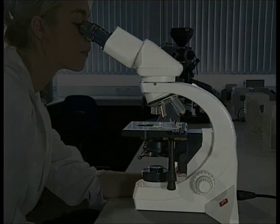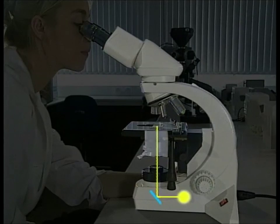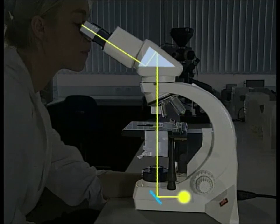All microscopes contain the same key components. These are a controllable light source, a substage condenser to focus the light onto the specimen, an objective lens which resolves detail in the image, and an eyepiece which focuses the image onto the eye.